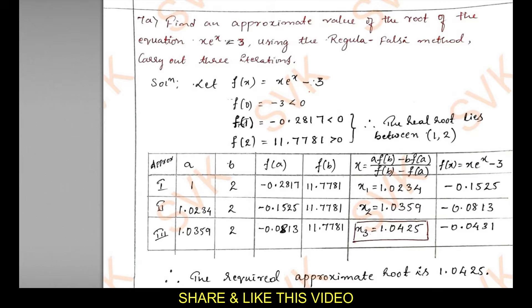Nothing to worry about the problem — the problem will be different but the solving method will be common to all branches. The problem given is: find an approximate value of the root of the equation x·e^x = 3 using the Regula Falsi method, carrying out three iterations. You need to find the real root and carry out three iterations.